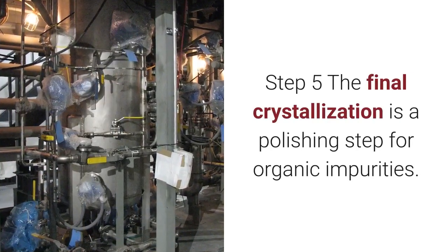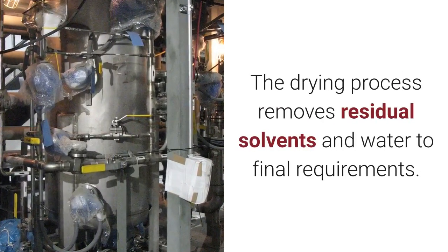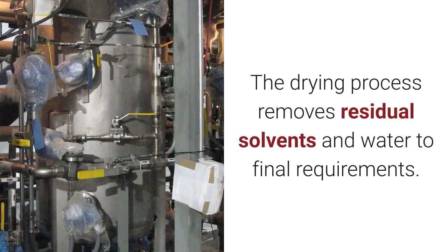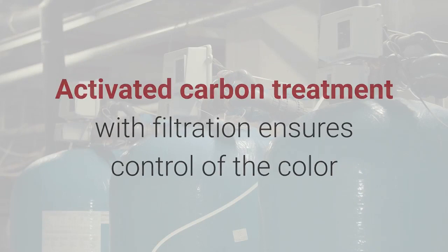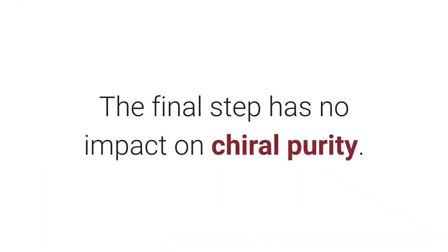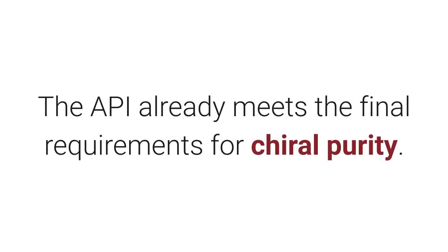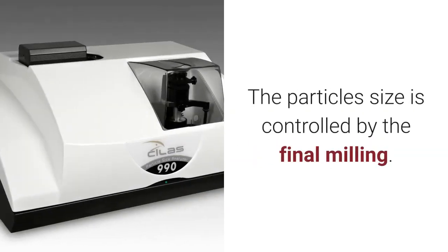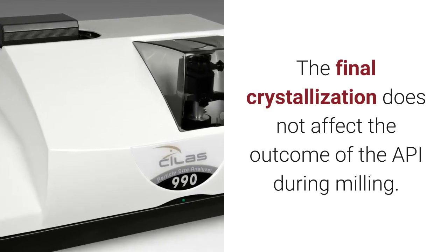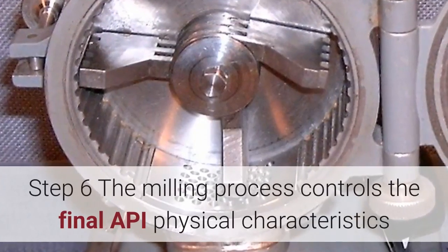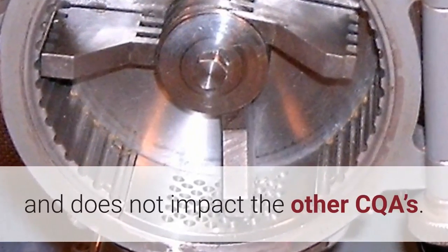Step 5, the final crystallization, is a polishing step for organic impurities. The drying process removes residual solvents and water to final requirements. Activated carbon treatment with filtration ensures control of color and foreign matter. The final step has no impact on chiral purity, as the API already meets the final requirements for chiral purity. The particle size is controlled by the final milling, and the final crystallization does not affect the outcome of the API during milling. Step 6, the milling process, controls the final API physical characteristics and does not impact the other CQAs.